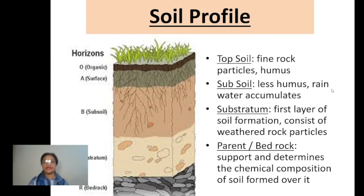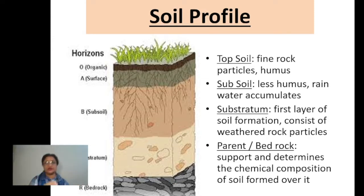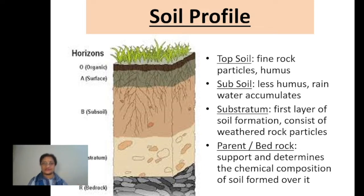Now let's discuss soil profile. The soil profile shows the actual formation of soil — from the underlying bedrock or parent rock upward, layer by layer. Every layer gives a clear picture of how the soil found on Earth's surface is formed. It is essentially a vertical cross-section of the different layers of soil formation.